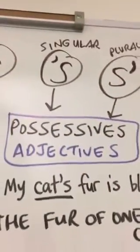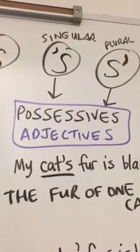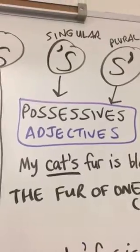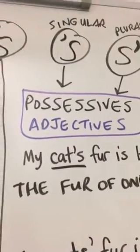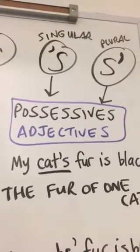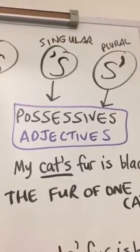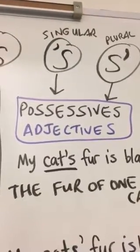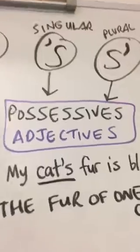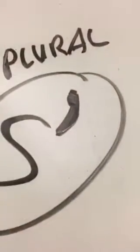Sometimes the apostrophe S is a singular possessive. Sometimes it's a plural possessive, depending on where the apostrophe is. So notice that little mark right there, that's the apostrophe.